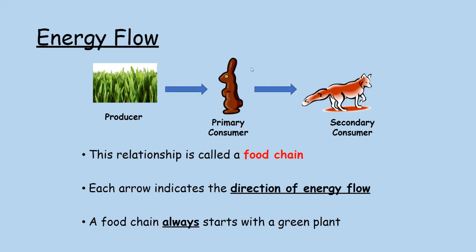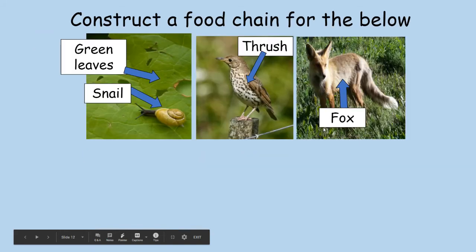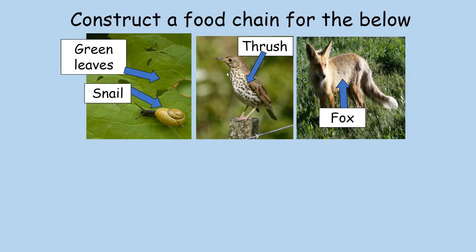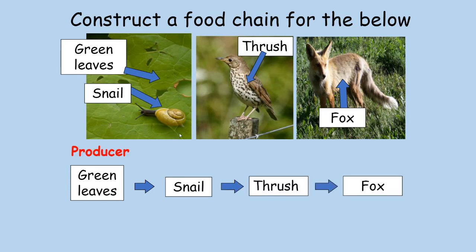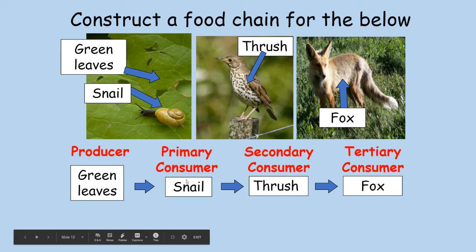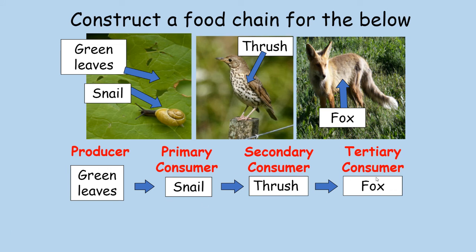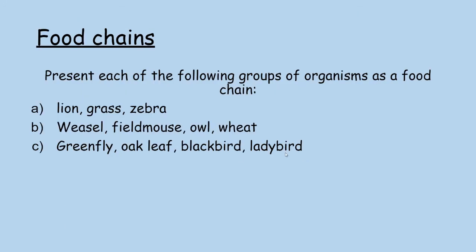We always start a food chain with a producer. Drawing left to right: producer → primary consumer → secondary consumer. For example: green leaves → snail → thrush → fox. The producer, primary consumer, secondary consumer, and tertiary consumer. Also note that the thrush is the predator of the snail, but the thrush is the prey of the fox — just as the snail is the prey of the thrush.